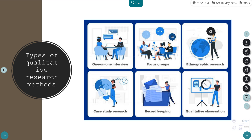Ethnographic research involves studying people in their own natural environment through in-depth observation — an anthropological study would fall under this. Case study research is used to describe an organization or entity. Record keeping is when you already have an existing reliable document and extract data from it. Qualitative observation is data collected through systematic subjective methodologies.